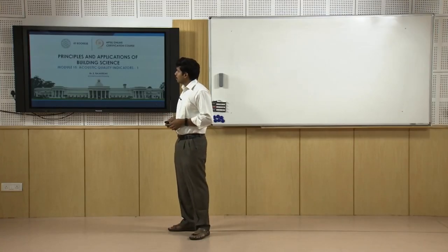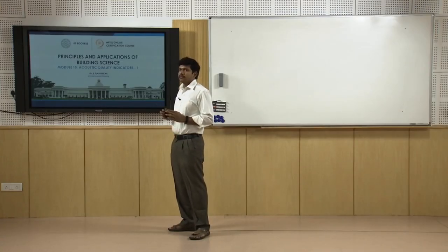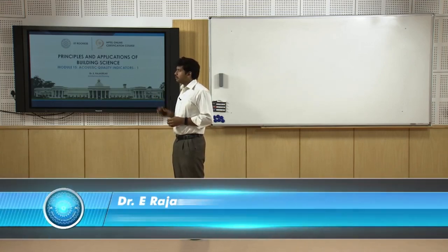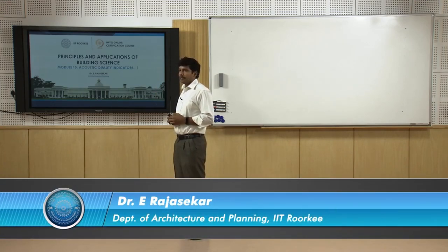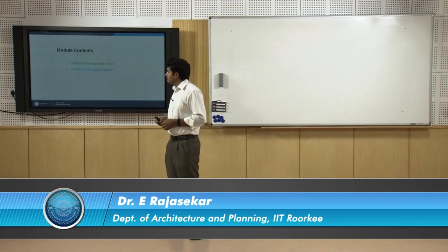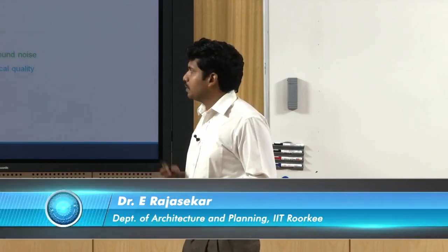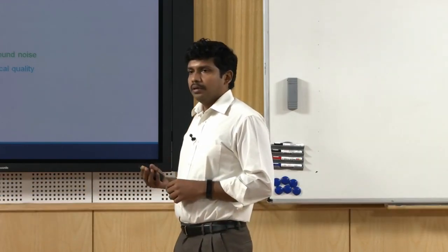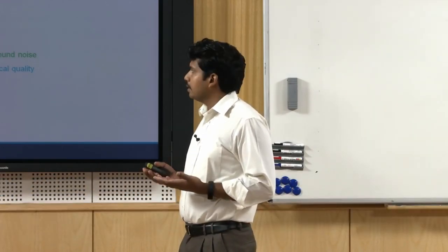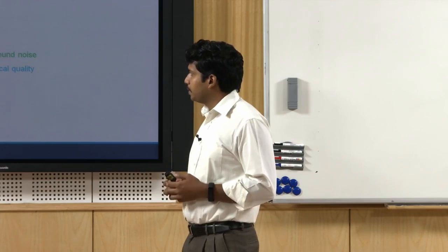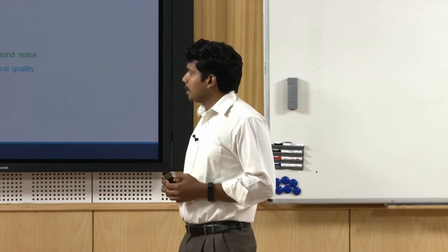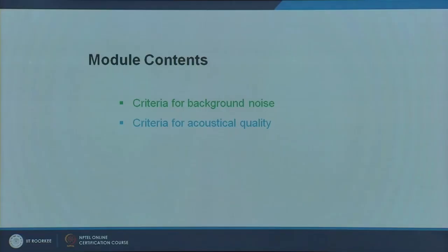In this module we will be talking about acoustic quality indicators. There are two modules in which we will be looking at acoustic quality indicators. This module primarily covers the criteria for background noise — what indicators or indices we need to understand before setting the background noise level in a given space — and next we will be talking about criteria for acoustic quality, that is, good listening.